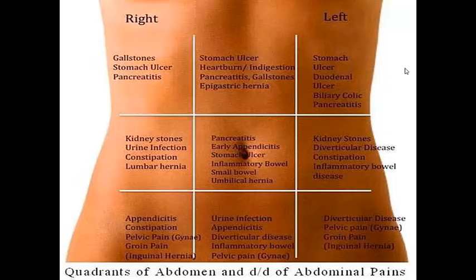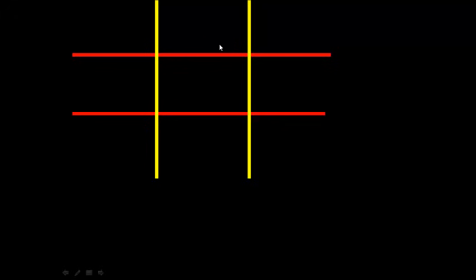All these conditions might seem confusing to learn, and sometimes pain can be referred to other areas. I've concluded a very easy way to learn the differential diagnosis of abdominal pain according to the quadrants. This diagram represents the nine regions: right hypochondriac, epigastric, left hypochondriac, right lumbar, umbilical, left lumbar, right iliac, hypogastric, and left iliac regions.